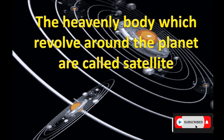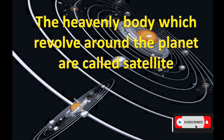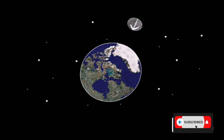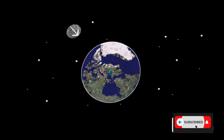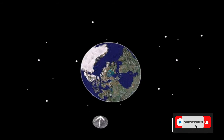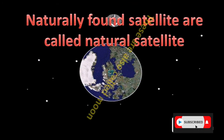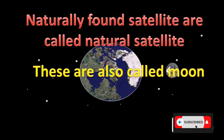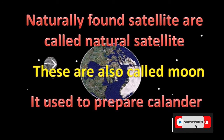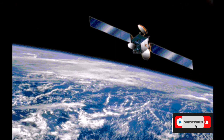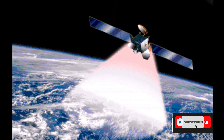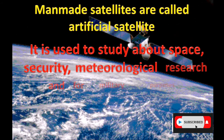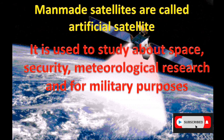The heavenly bodies which revolve around a planet are called satellites. There are two types: naturally found satellites are called natural satellites, also called moons, and are used to prepare calendars. Man-made satellites are called artificial satellites, used to study space, security, meteorological research, and for military purposes.